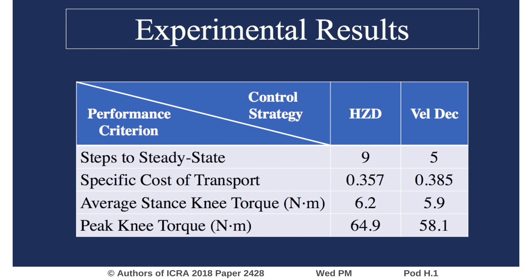In experiment, velocity decomposition required five steps to return to steady state, as opposed to nine for HCD-based control. Because velocity decomposition returned to steady state faster, the average cost of transport was higher than for HCD-based control. The proposed method also returned smaller average and peak knee torques.